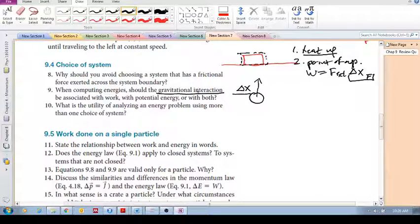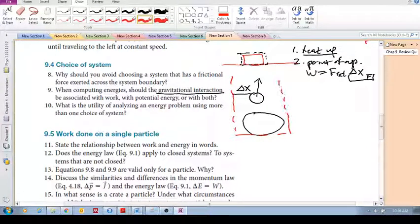And we're considering gravitational interaction, we can consider gravitational interaction in two ways. The one is, we include the gravitational interaction in our system. When you include, say, the Earth in your system, that means that the Earth is not exerting an external force, but what's happening is your potential energy is changing.